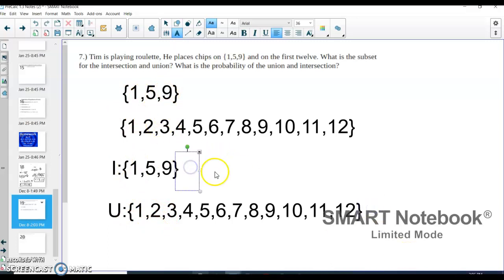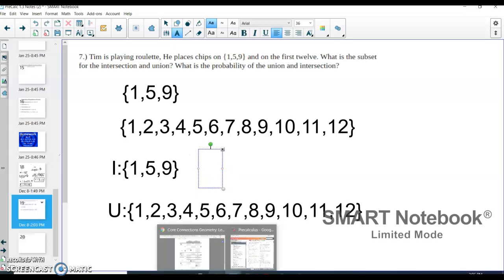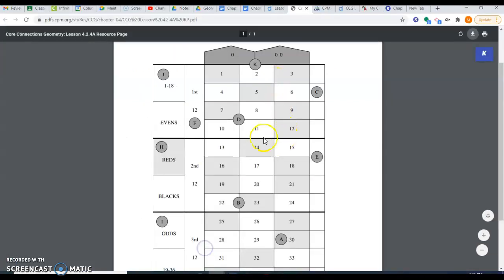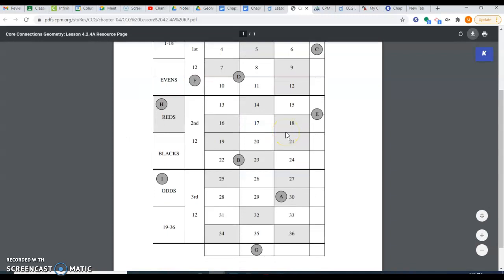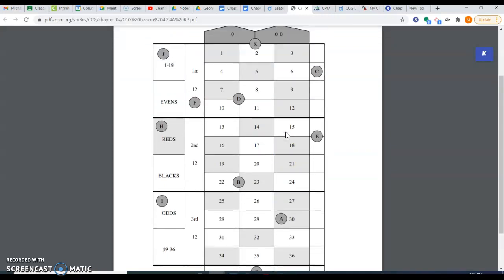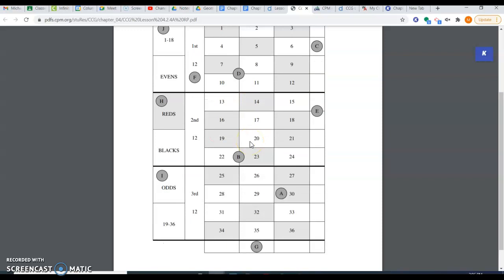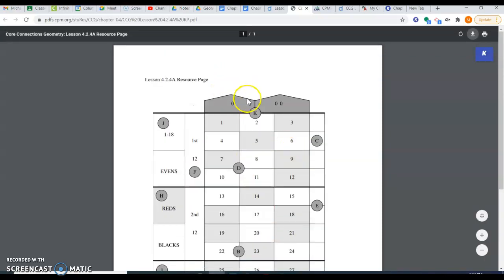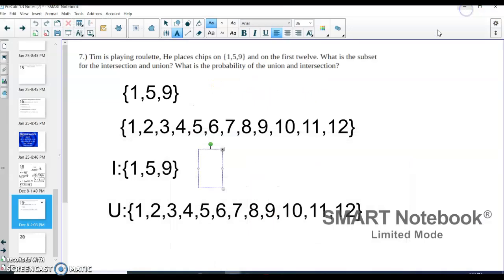Now we're going to talk about the probability that the intersection actually hits. What we need to remember is that there are 38 numbers on a roulette board. There's 1 through 36 and then 0 and 00, so 38 total numbers. In our intersection, there's only 3. So there is a 3 out of 38 chance that our intersection hits.